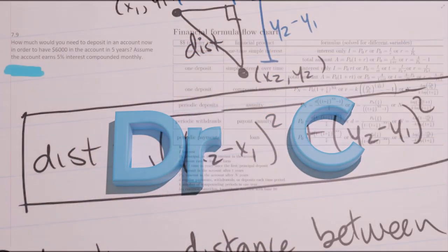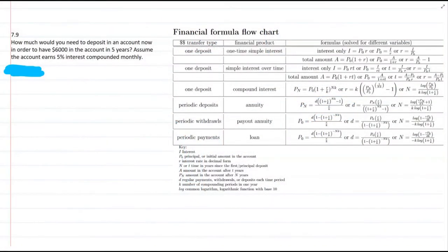So this question says how much money would you need in an account now in order to have $6,000 in the account in five years? So this one's a little bit tricky.